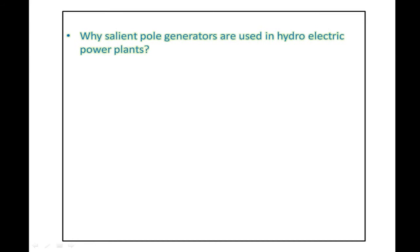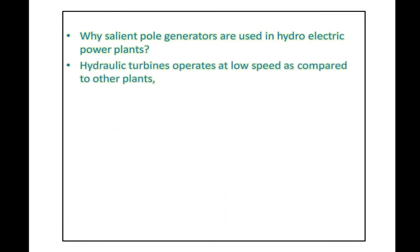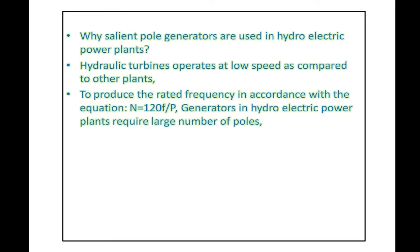Let's now answer the question. Hydraulic turbines operate at low speed as compared to other plants. To produce the rated frequency in accordance with the equation N = 120F divided by P,